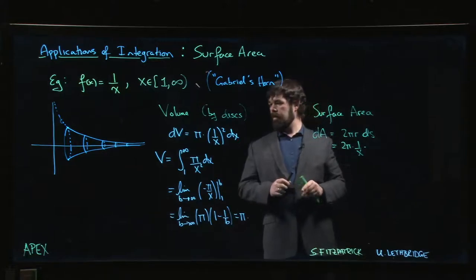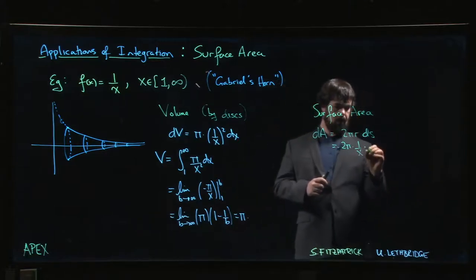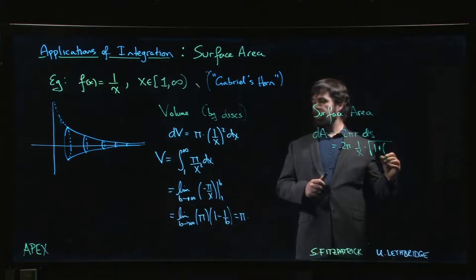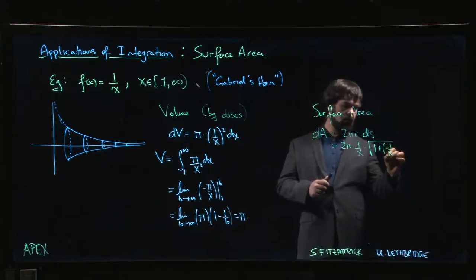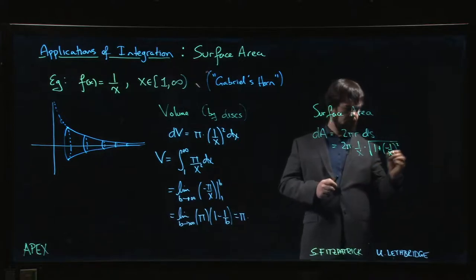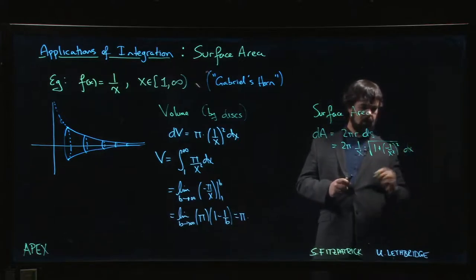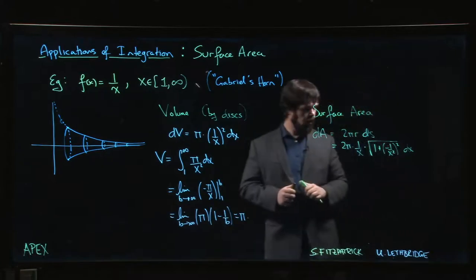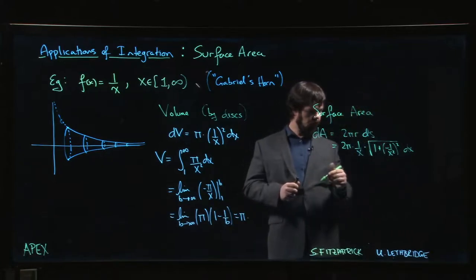The radius is going to be f(x), 1 over x. The arc length is going to be √(1 + (f'(x))²). The derivative of f(x) is -1 over x², squared, dx.